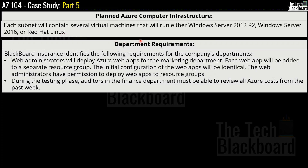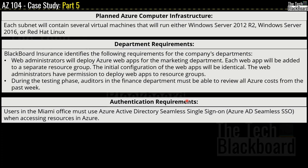For department requirements: web administrators will deploy Azure web apps for the marketing department. Each web app will be added to a separate resource group, the initial configuration of the web apps will be identical, and web administrators have permissions to deploy web apps to resource groups. During the testing phase, auditors in the finance department must be able to review all Azure costs from the past week. For authentication requirements: users in the Miami office must use Azure Active Directory seamless single sign-on when accessing resources in Azure.